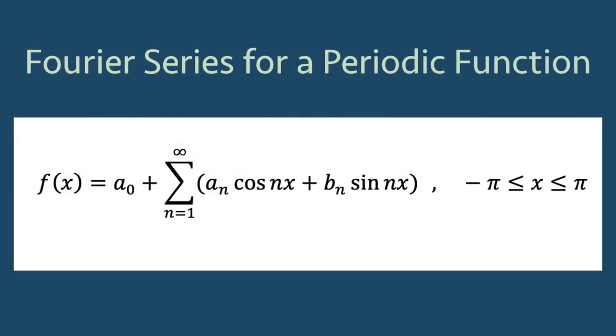If we assume that a periodic function f can be expressed as an infinite sum of sines and cosines, the notation we can write is f(x) = a0 + sum from n=1 to infinity of an*cos(nx) + bn*sin(nx), where n is an integer and negative pi to pi is the period.